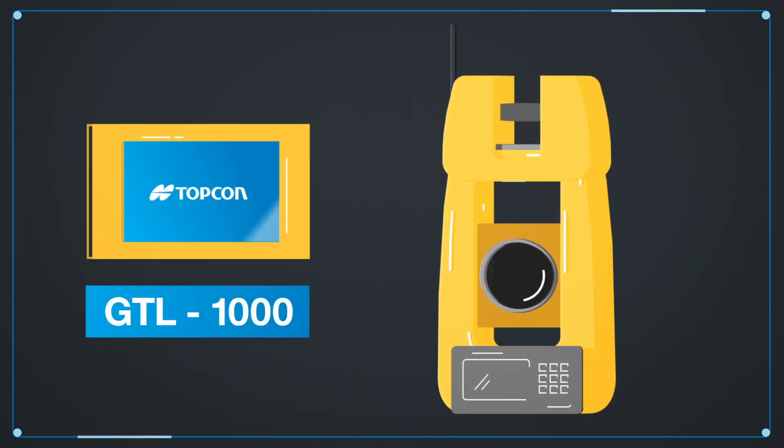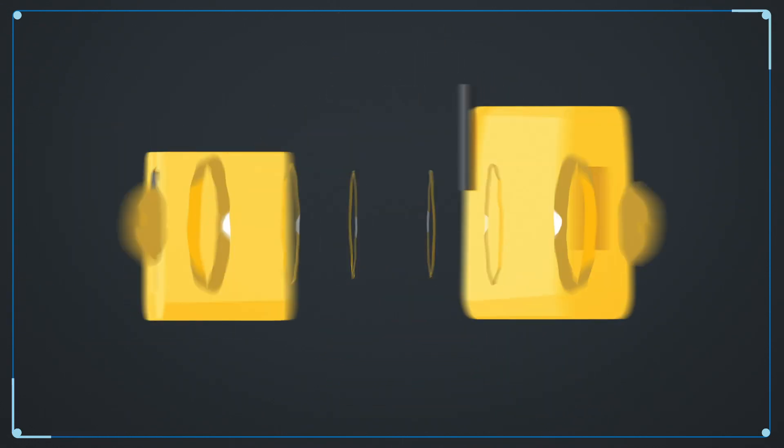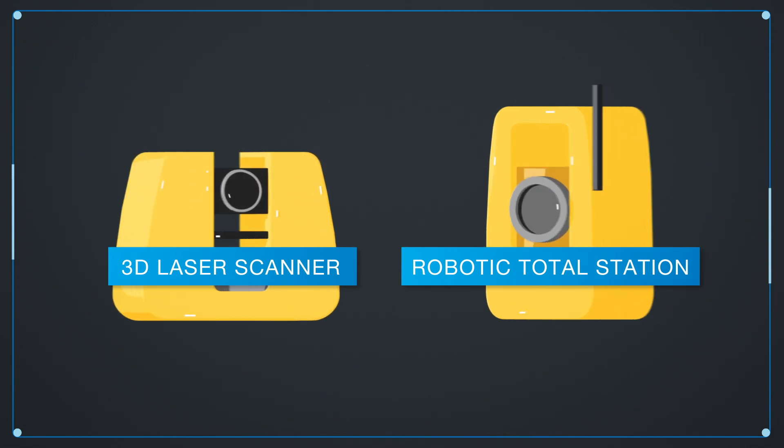Topcon recognized this problem and responded with the GTL instrument. The GTL instrument uses the digital layout capabilities of a one-man robotic total station with the power of a 3D laser scanner.